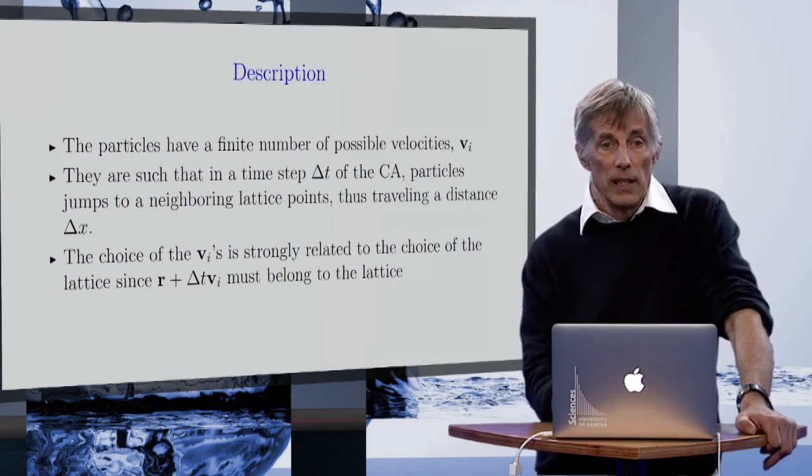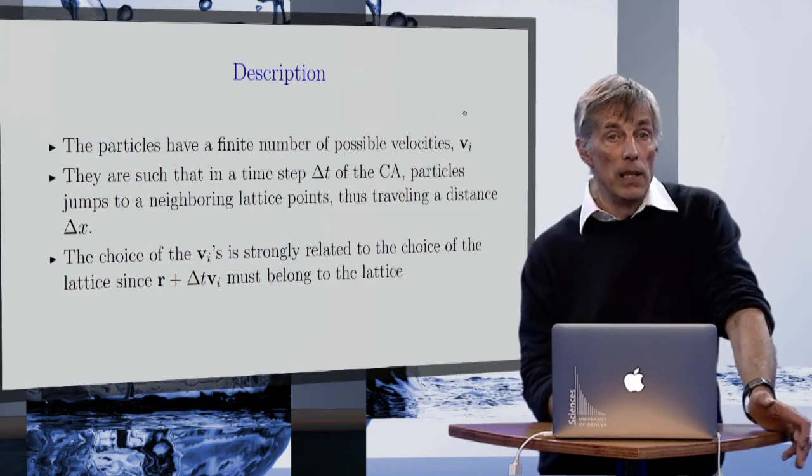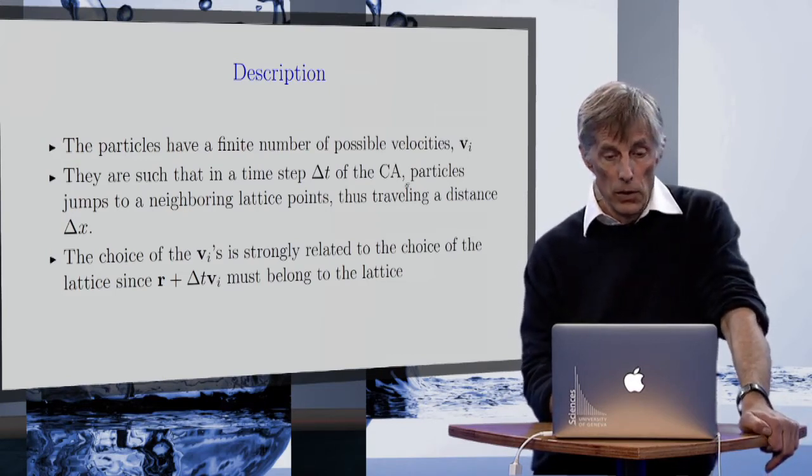The idea is that in this discrete universe, you have a discrete velocity Vi. Before we saw it could be left, right, up, and down, but according to the lattice, you can have a bit more solutions.